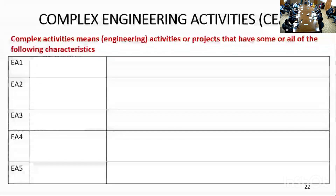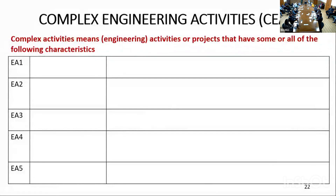Complex engineering activities or projects have some or all of five characteristics. If any two of these characteristics are present, it would be taken as a complex engineering activity. And if you increase the complexity, all five can also contribute to making it a complex engineering activity.